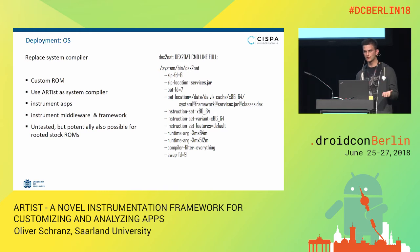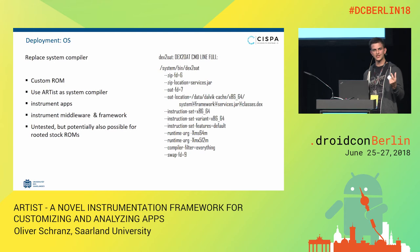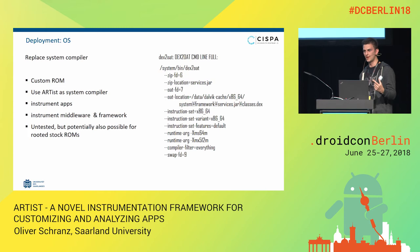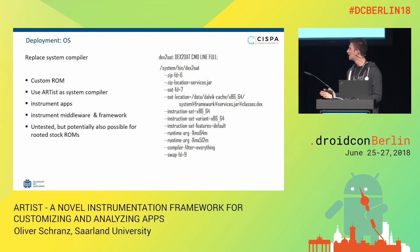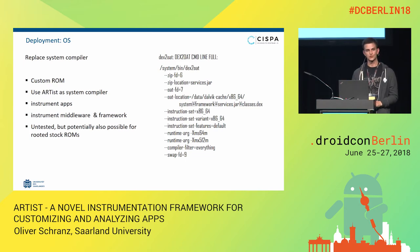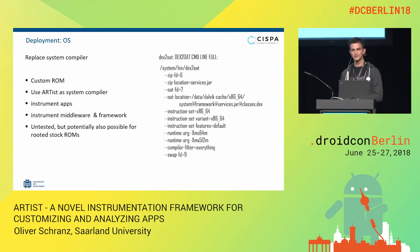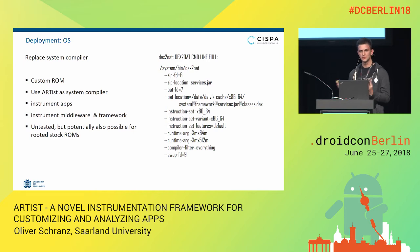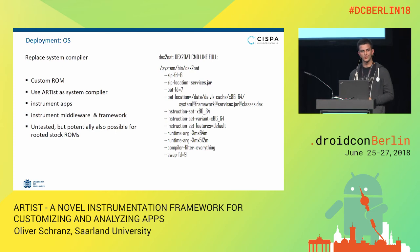For the fun of it, we wrote a module that instruments all those 25,000 methods. Into each single basic block in the control flow graph, we injected a call that used reflection to get the method name — I know it's dirty, but bear with me. The method name is then printed to logcat. So everything that's happening in Android now has a logcat entry with the name of the method. If you run this on the x86 emulator, it's hardly slow, but it works, proving that this is really robust and also scales.